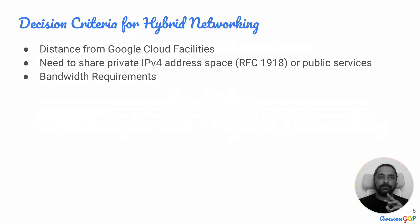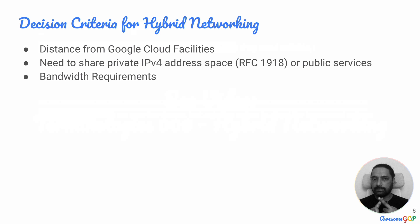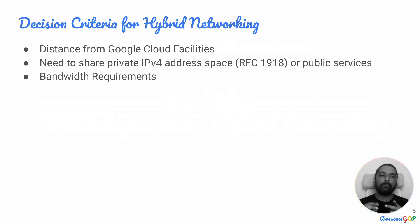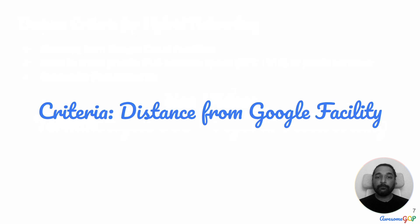There are three decision criteria when choosing a hybrid networking option: how far the private data center is from the Google Cloud facility, whether they want to use shared IPv4 private address space or only public services, and how much bandwidth they require.